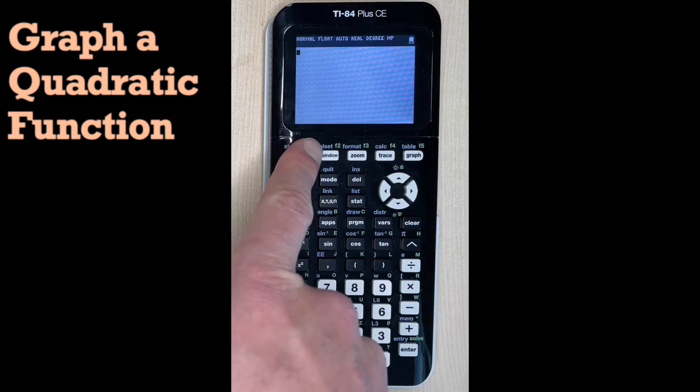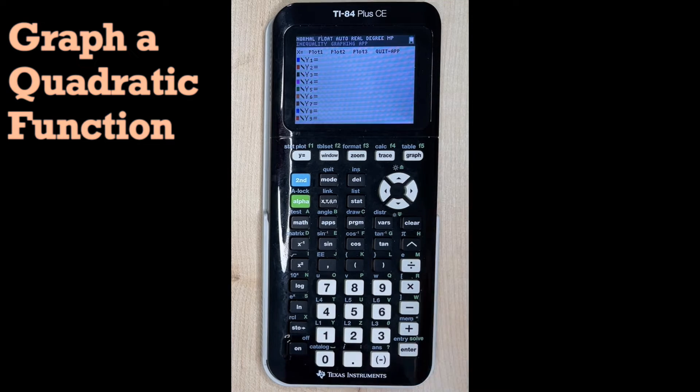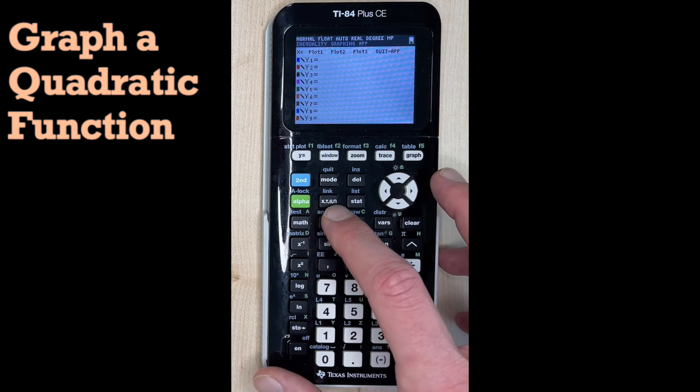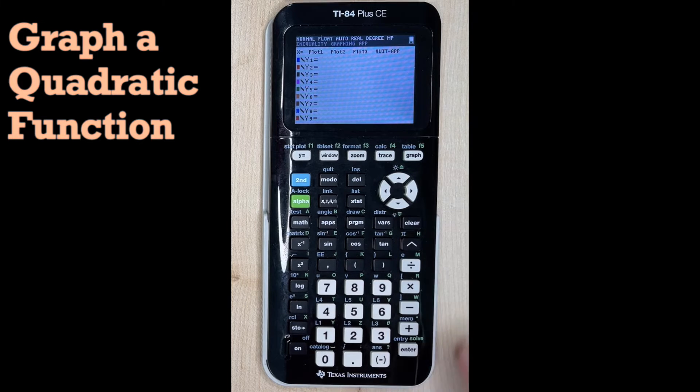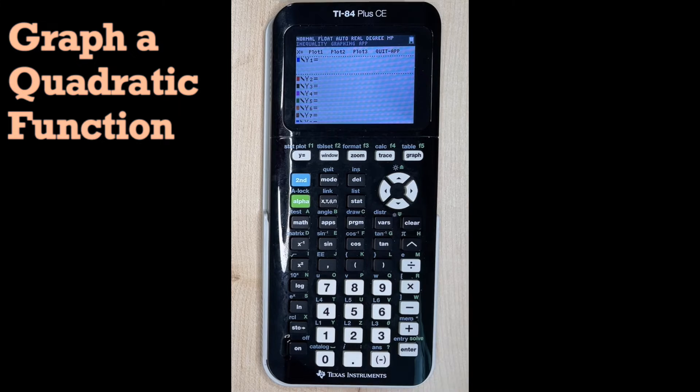We're going to hit Y equals. Now we need to remember a couple things. Our variable X is located right here next to alpha. It says X, T, theta, and then N. If we just hit that, it gives us an X. Another thing we know: for a quadratic, we're going to have an exponent of 2. This button right here is X squared. When we hit that, it gives us an exponent of 2. We're going to be using both of those keys today.